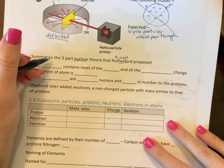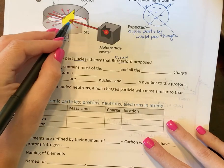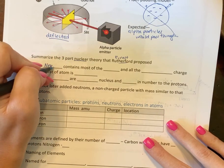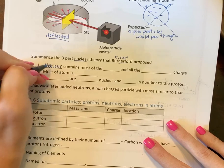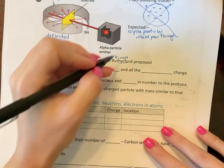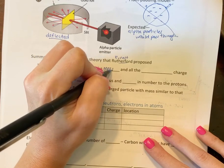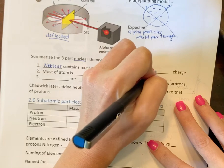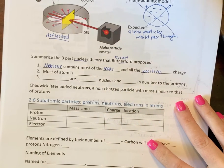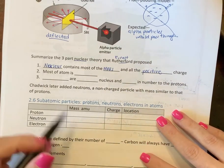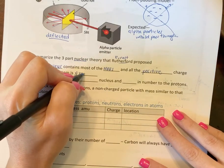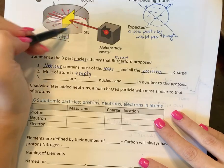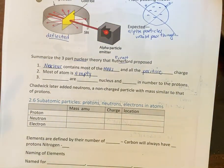And so he said, well, there must be a small portion here and we're going to call this the nucleus. And it contains most of the mass of the element and all of the positive charge. Most of the atom is actually empty space. Now, based on the results of this experiment, and he's correct here.